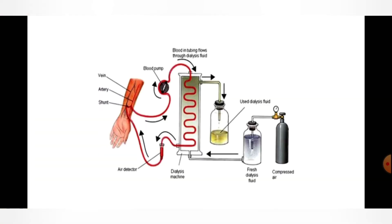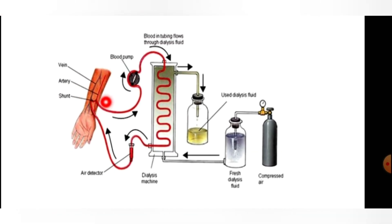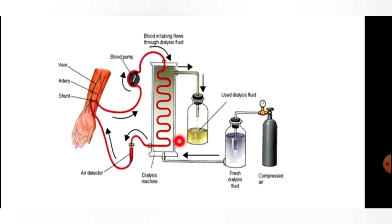Here you can see the dialyzing unit in detail. The patient is connected with a strand connecting the artery to the vein. From the artery, impure blood containing nitrogenous waste such as urea is pumped into the dialysis machine. Inside the machine, blood flows through tubing in the dialysis fluid. The nitrogenous waste exits through the pores of the cellophane tube into the dialyzing fluid.